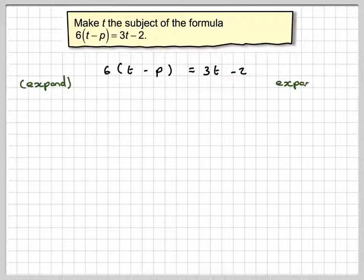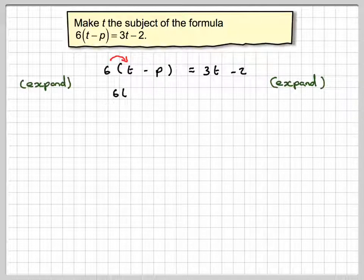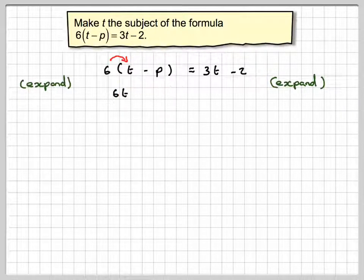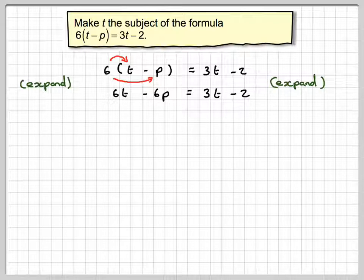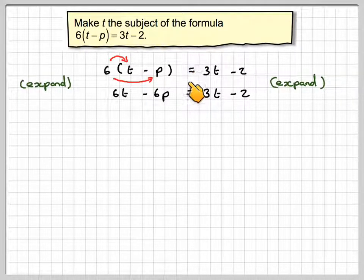First step would be to expand the brackets, so that's going to give me 6t - 6p. And this side will just keep the same. Notice I keep my equal signs in a column.